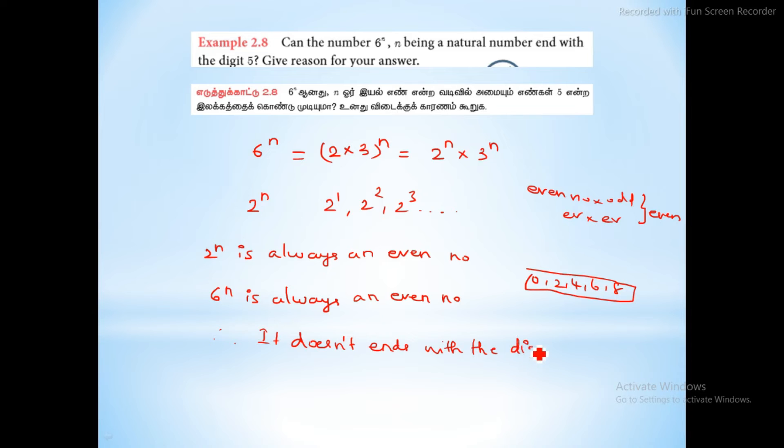Therefore, 6 power n does not end with the digit 5. If a number ended in digit 5, that would be an odd number, not an even number. So that is the answer.